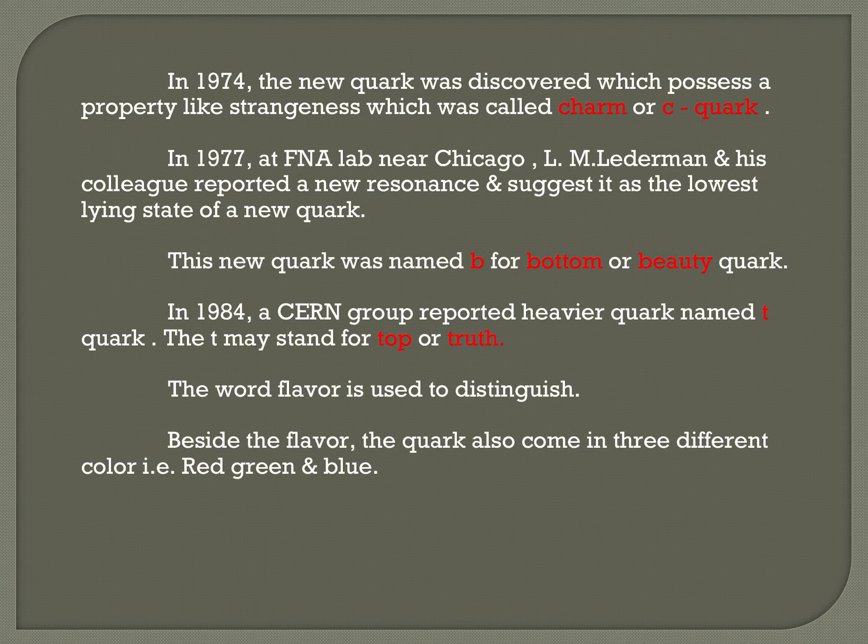In 1984, a CERN group reported that while doing experiments related to quarks, they observed a state with a mass of 30 to 50 GeV/c². This was identified as heavier mesons containing a heavier quark, and on that basis the name of that heavier quark is top, or truth, denoted by the t quark.